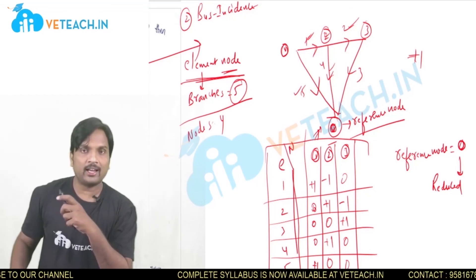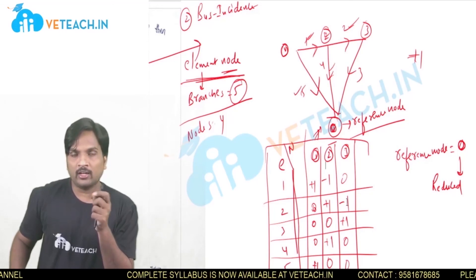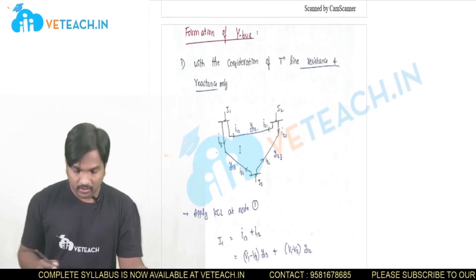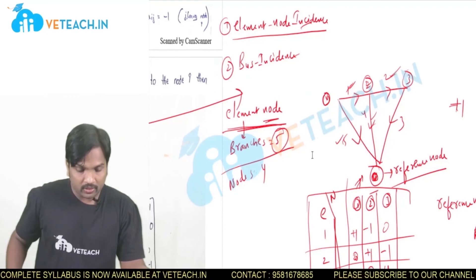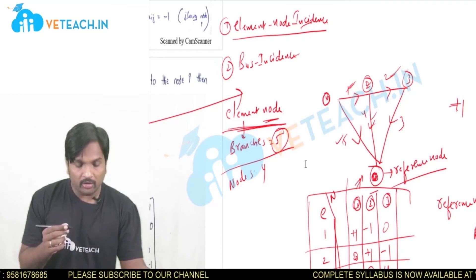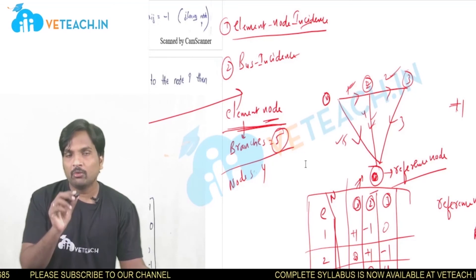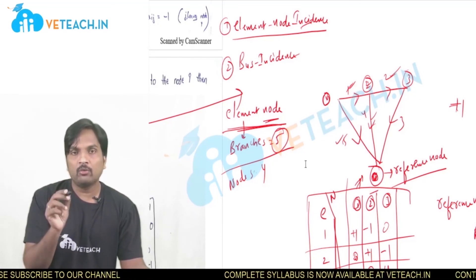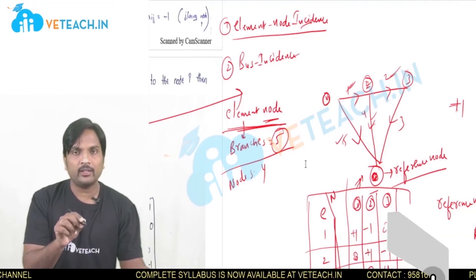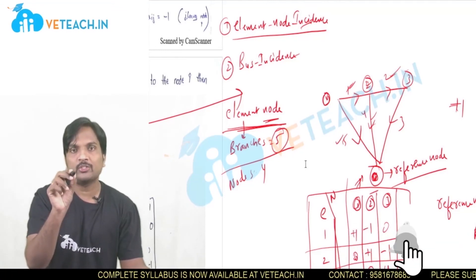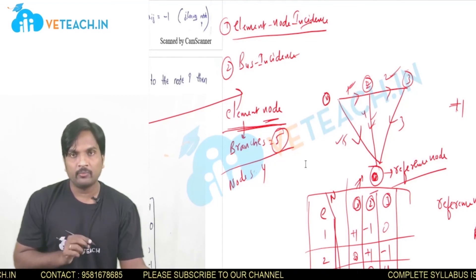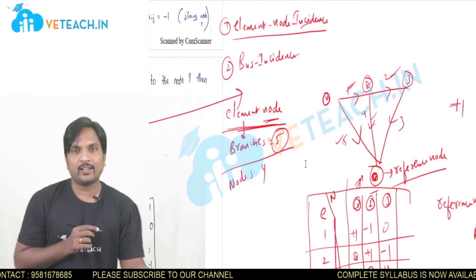We also discussed Y-bus formation by node KCL explanation in the last class. Once again: in the element node incidence matrix, rows are elements and columns are nodes including the reference node. For the bus incidence matrix, we remove the reference node column (node 0), and the resultant matrix is called the bus incidence matrix. That is it for today's class. Thank you.